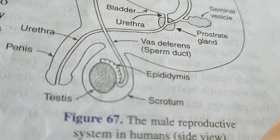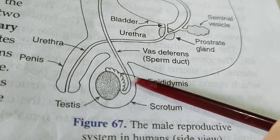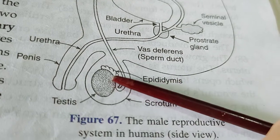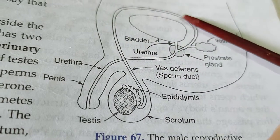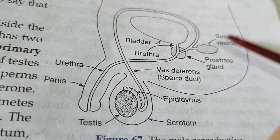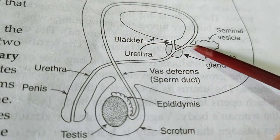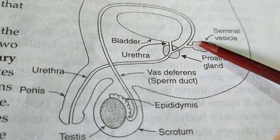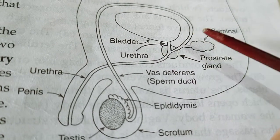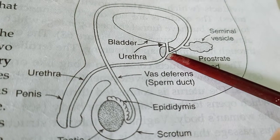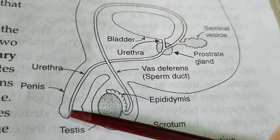Sperms are produced in numerous numbers in the human male body. Sperms produced from the testes pass through the coiled structure called the epididymis, and then enter into the sperm duct or vas deferens. The seminal vesicle is the gland which adds the liquid called semen into the sperm duct. Semen provides nourishment to the sperms and helps in their movement. The prostate gland also secretes substances which help in the nourishment of sperm, and finally the sperm passes through the penis.